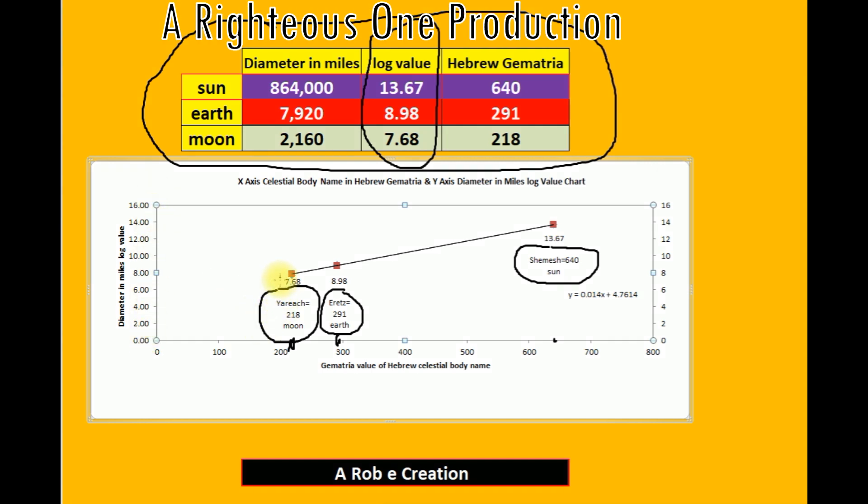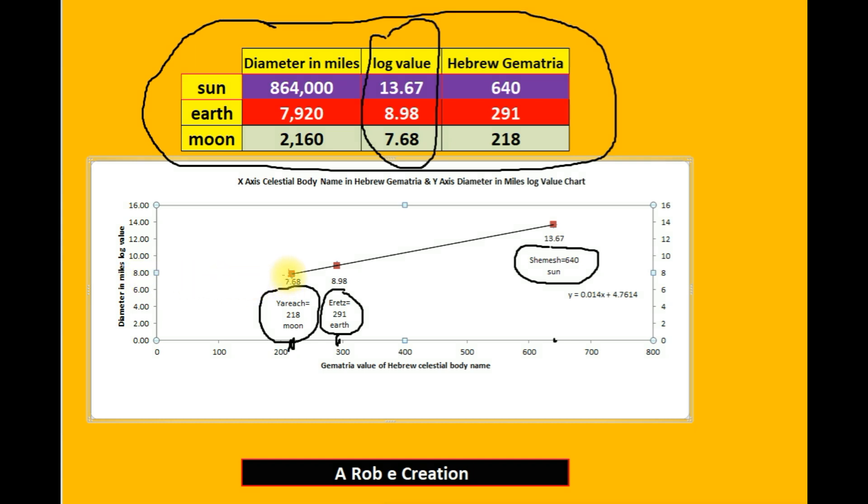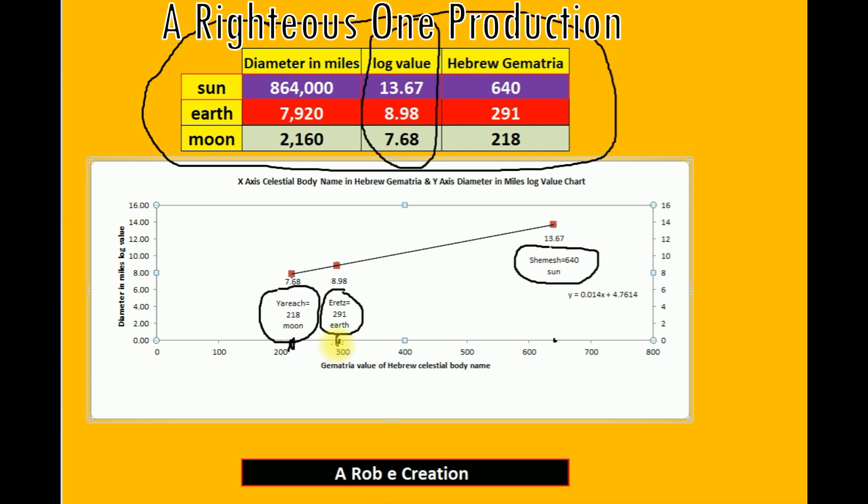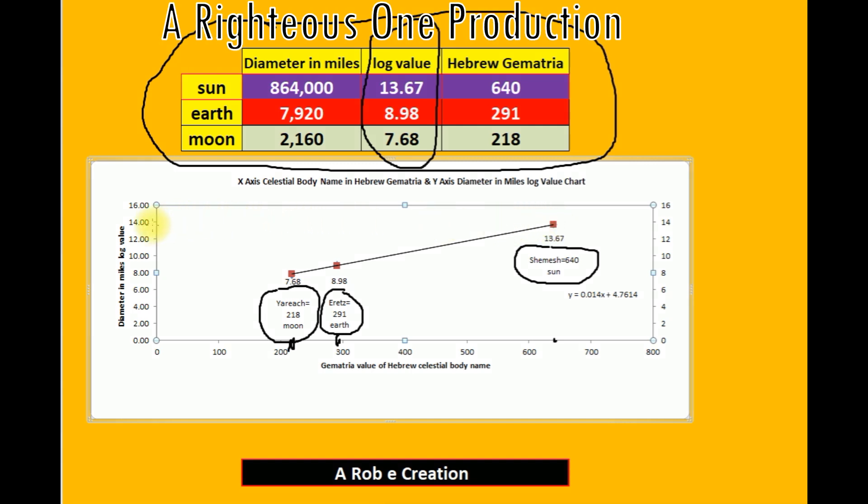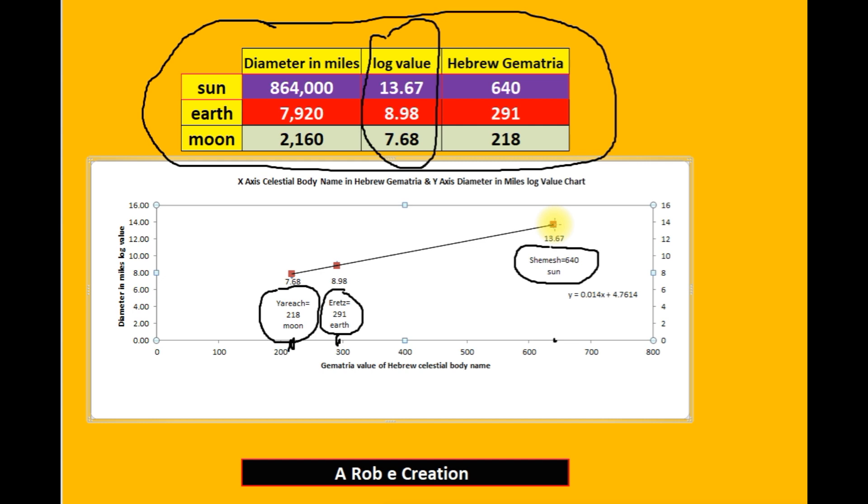Because the numbers are big, we're going to use the log value on the Y-axis here. The moon has a log value of 768 right here. It correlates exactly with the Hebrew name Yarech. The earth has a log value of 898 right here, exactly correlating with Eretz at 291. Shemesh, sun, 640, exactly with the log value of 1367 for the diameter of the sun in miles.